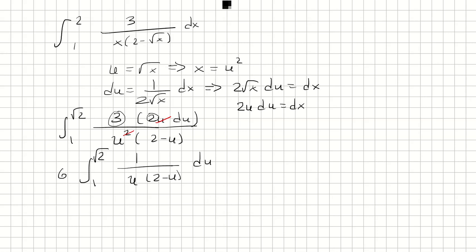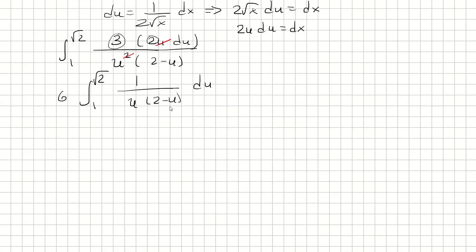Now at this point, I can split this up into two separate fractions. So in order to do this, I'm going to use partial fraction decomposition. So we'll have 1 over u times 2 minus u. That's A over u plus B over 2 minus u.